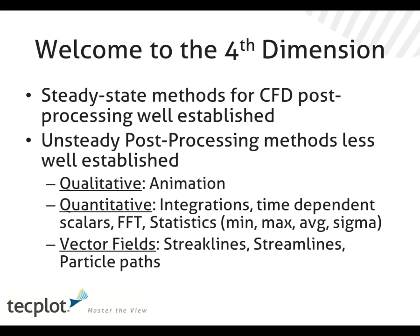Where people have settled for unsteady post-processing is: just make an animation, which is a good starting point for qualitative information. But the real quantitative information requires a different level of analysis — dimensionality reduction through integrations or time-dependent scalars, looking at specific values in the domain. Fourier transforms allow you to look in the frequency domain. It's still lower dimensionality, but it can help you understand how things vary through time in a more meaningful way. And then just statistics: min, max, average, and standard deviations of how things vary over time.